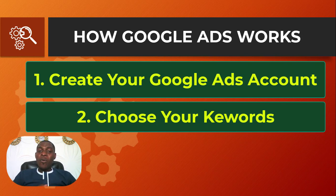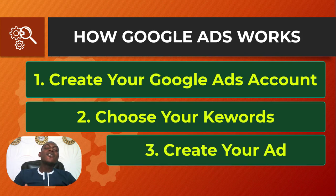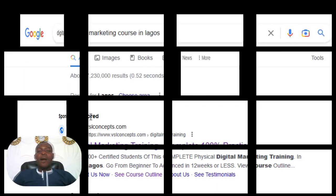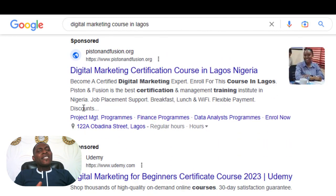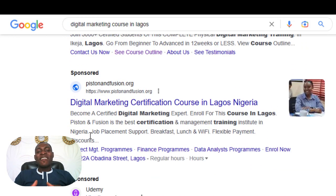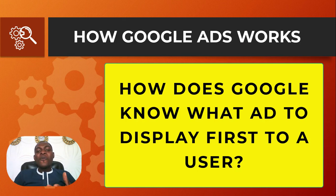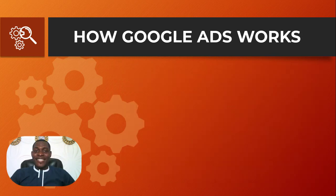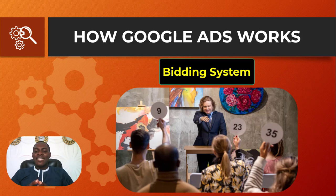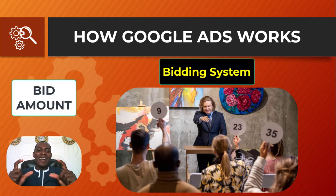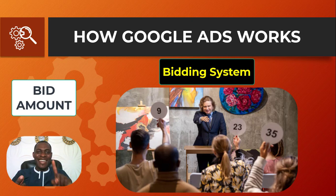After getting your keywords, you will create an ad that will be displayed to users when they search for those targeted keywords. But there will be many competitors running the same ads at the same time. How does Google know which ad to display to the user? Google does this through a bidding system. When you are creating your ad, you will be able to put in your bid amount — the highest amount you are willing to pay per click for each of those keywords.